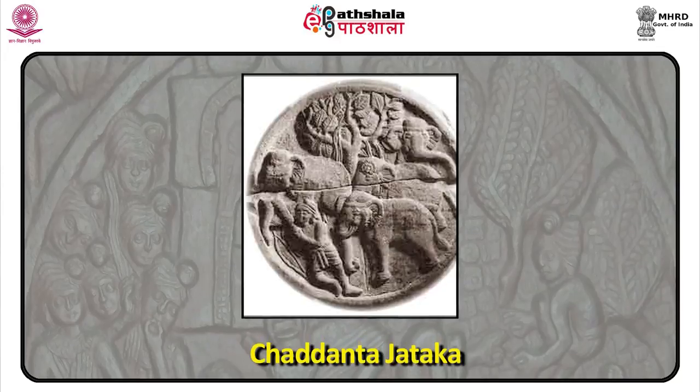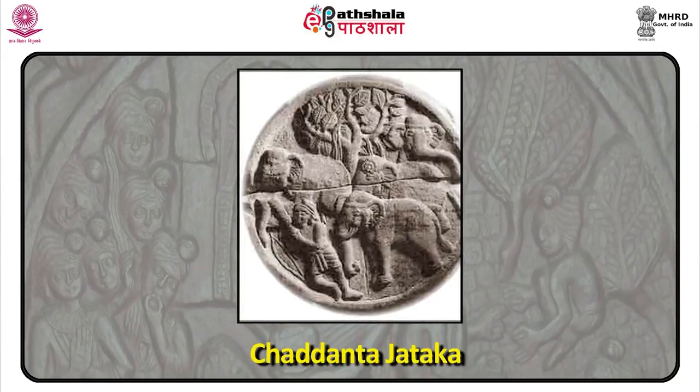According to the Chaddanta Jataka, the Bodhisattva was once born as an elephant with six tusks who had two wives. The younger wife becomes extremely angry because once, while playing, the elephant shook a tree — flowers fell on the head of the elder wife while thorns and twigs fell on the younger one. She immediately jumped off a cliff and died, was reborn as a queen, and on the pretext of being pregnant, desired the tusks of that particular elephant. In one version, the elephant himself helps the hunter cut his tusks and dies. Seeing the tusk, the queen realizes he is no more, faints, and dies as well. This Jataka is depicted at Bharhut and various other places including Ajanta murals and Amaravati.